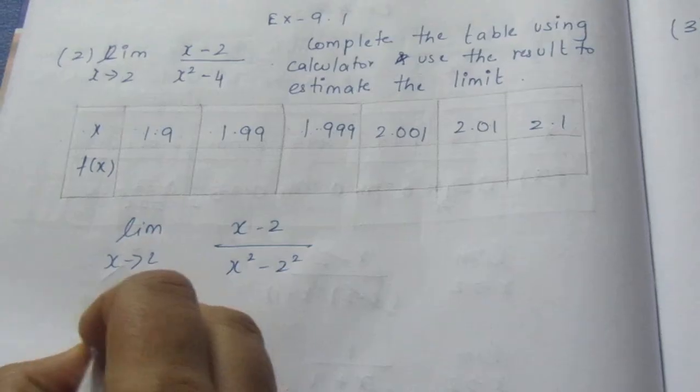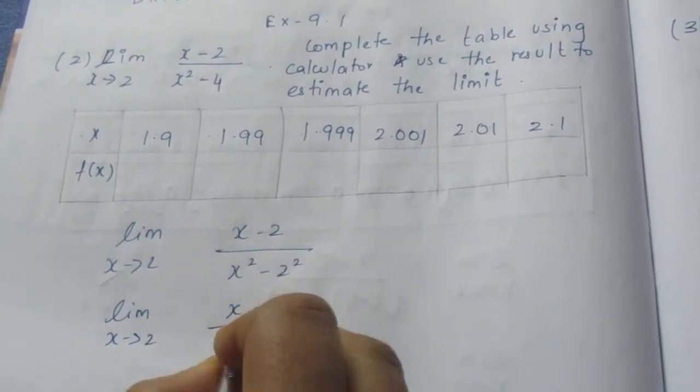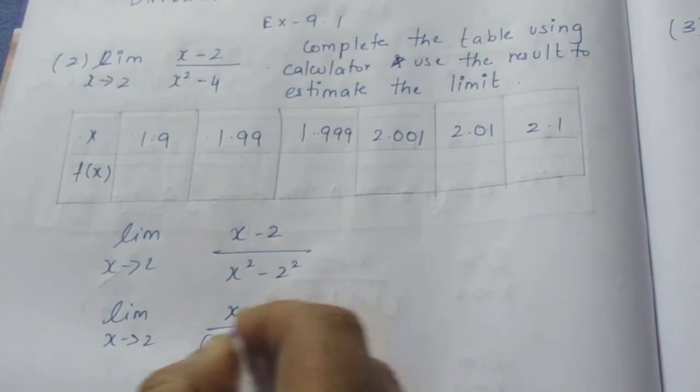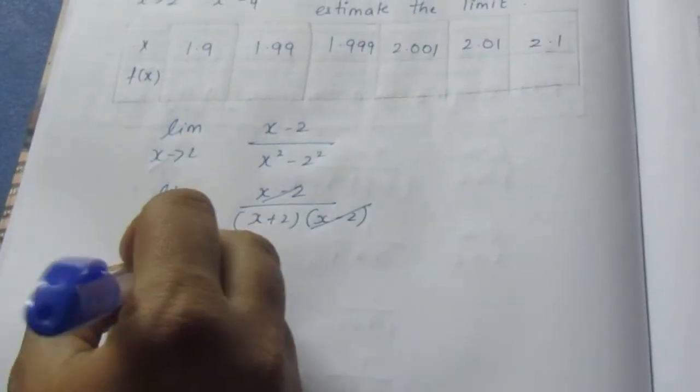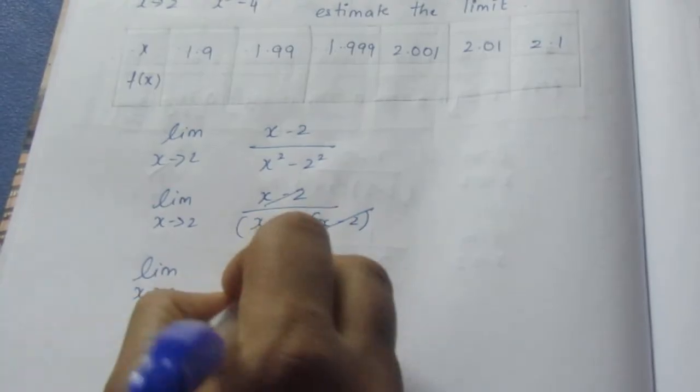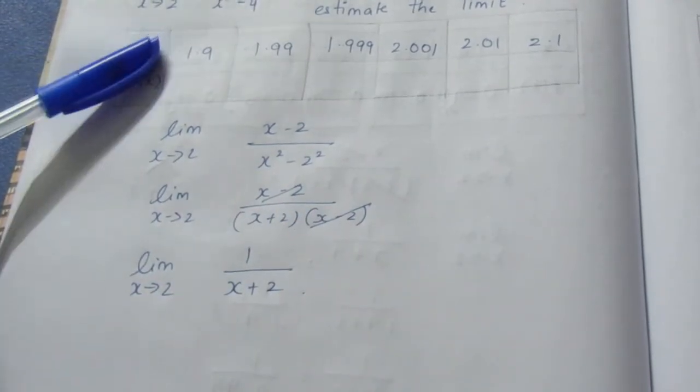That is, limit x tends to 2, x minus 2 by (x plus 2)(x minus 2). So we can cancel the values. Now, limit x tends to 2, 1 by x plus 2. Now, you can substitute the values as well.